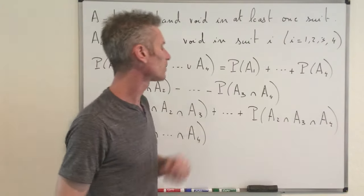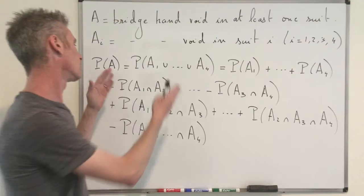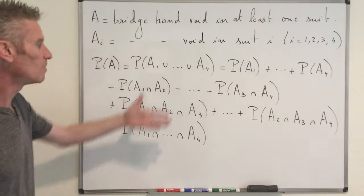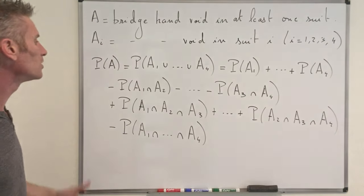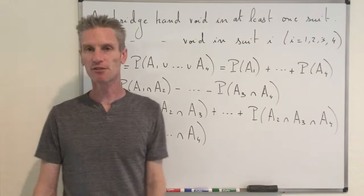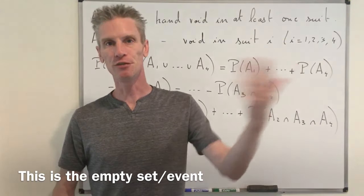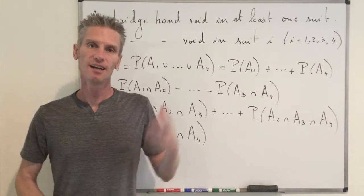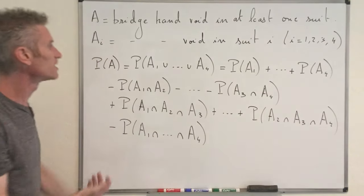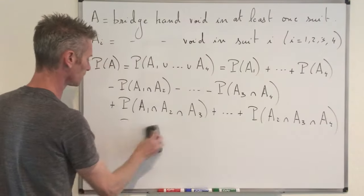Now, the event A1 ∩ A2 ∩ A3 ∩ A4 is the event that you are void in all four suits — which is obviously empty. If you take 13 cards from a deck of 52, you must have at least one suit. So this last term equals zero and we can remove it.